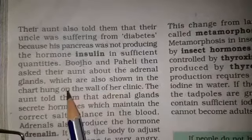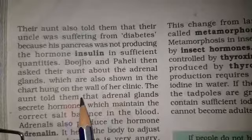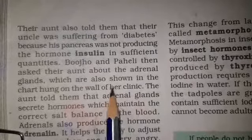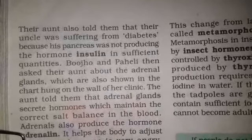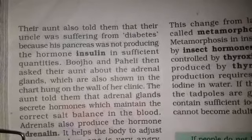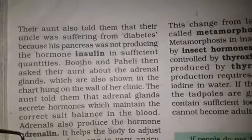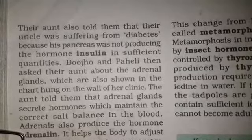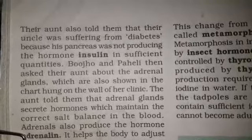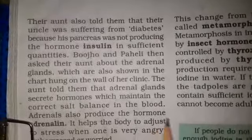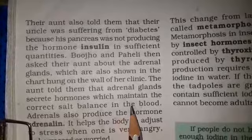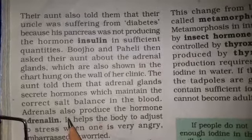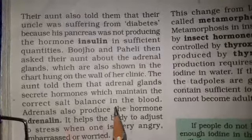Bujo and Paheli then asked their aunt about the adrenal glands, which were shown in the chart hung on the wall of her clinic. The aunt told them that the adrenal gland secretes a hormone which maintains the correct salt balance in the blood.